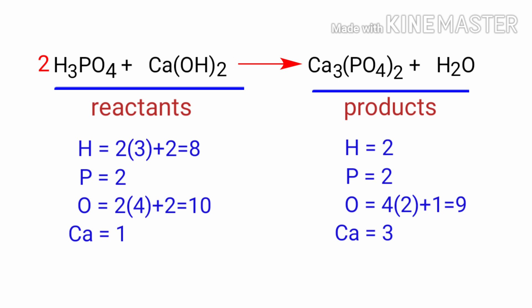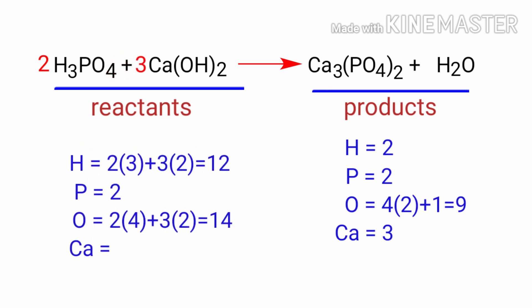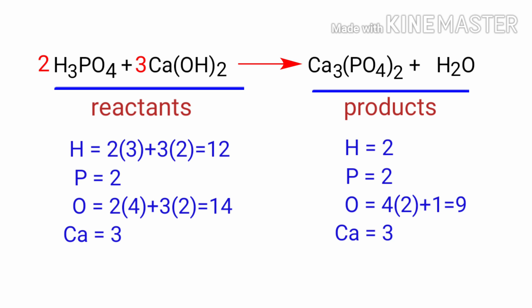Now we need to balance the calcium atoms. To do this we need to put a coefficient of 3 in front of Ca(OH)2. The calcium atoms are balanced.